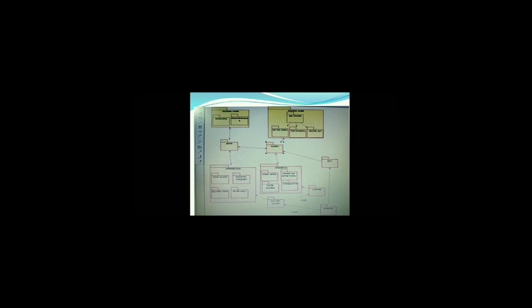These nested packages show the operations of their models. Admin has a dependency relationship with the database model, and the operations performed by the admin include ticket counter, bus driver management, payment checker, and query handler. The system also has dependencies with these operations. The government package is also linked with the system and with employees, as the government collects taxes from employee salaries according to rules and regulations.